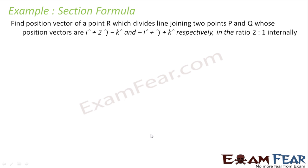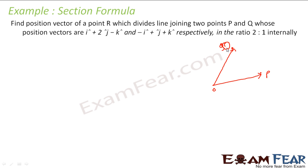The question says: find the position vector of a point R which divides the line joining two points P and Q in 2:1. So let's draw what the question is trying to say. I have two points, P here and Q here. Let's suppose this is my origin. So I have my P vector, I have my Q vector. Now the question is saying that there is a line that joins P to Q — it is P to Q, not Q to P. This is my line. The question says there is a vector R. This guy divides this line in 2:1. So this is 2, this is 1.